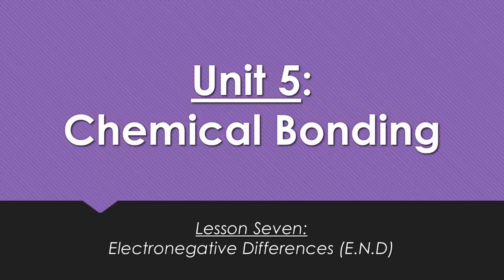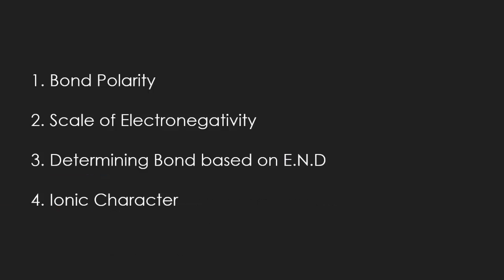Alright guys, lesson 7 is going to be on electronegativity differences. We're going to be talking about bond polarity, the scale of electronegativity, determining the type of bond based on its difference, and a phrase called ionic character.